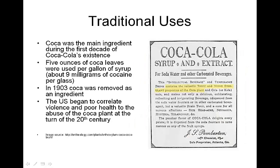This is probably the coolest part of my research, and one of the main reasons why I chose Erythroxylum coca — because I kind of already knew this about Coca-Cola. As you can see on the right, it contains valuable tonic and nerve stimulant properties of the coca plant. Coca was the main ingredient for the first 10 years of Coca-Cola's existence, and up to 5 ounces of coca leaves were used per gallon of syrup. But around 1903, the U.S. began to correlate violence and poor health to the abuse of the coca plant, and removed it as a main ingredient of Coca-Cola.